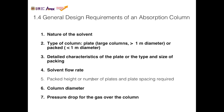Number five is the packed height or number of plates and plate spacing. This particular design requirement is not covered in this video or in the previous videos. And number six is the column diameter, which we attempted in the last example in the last video.